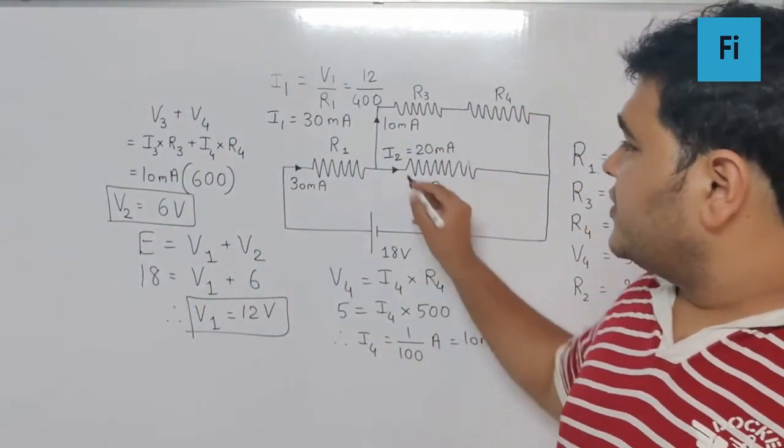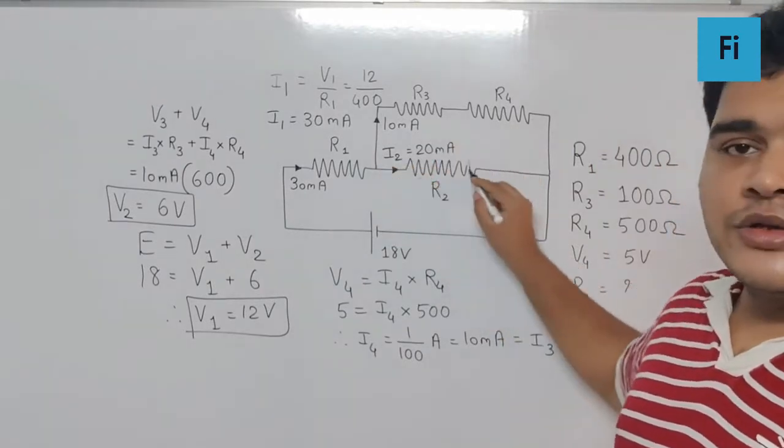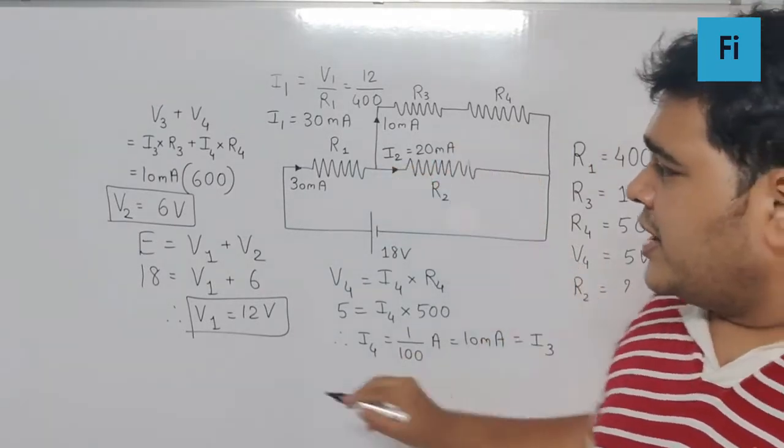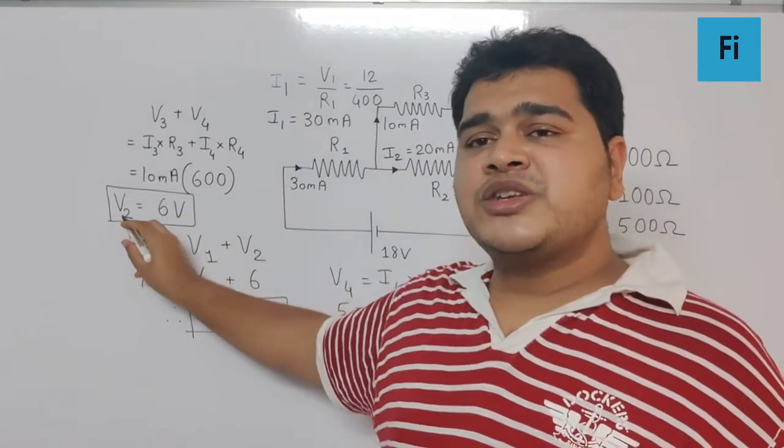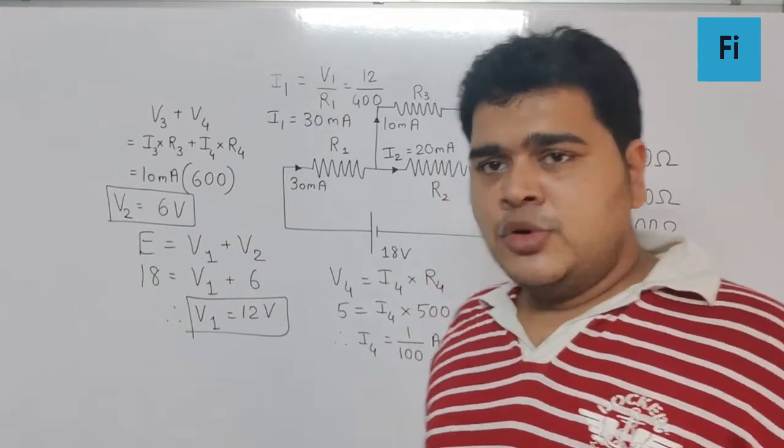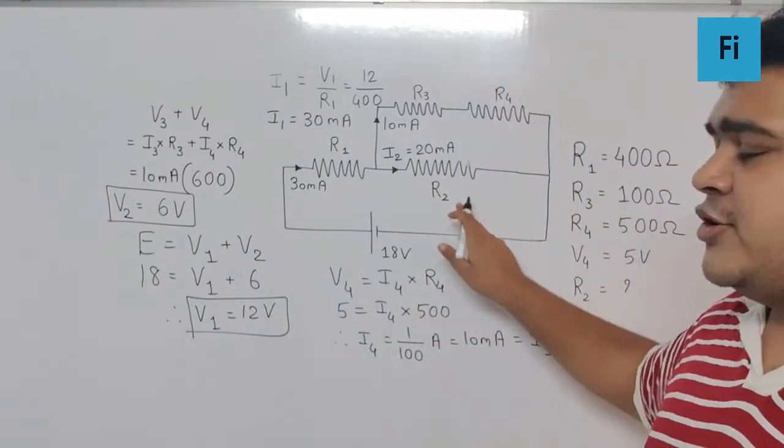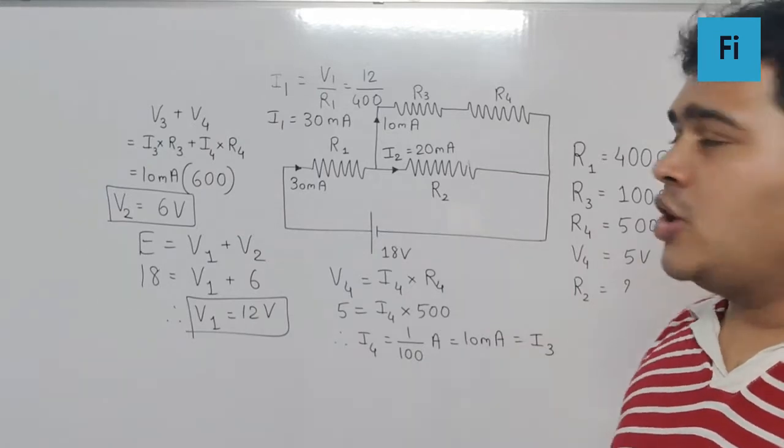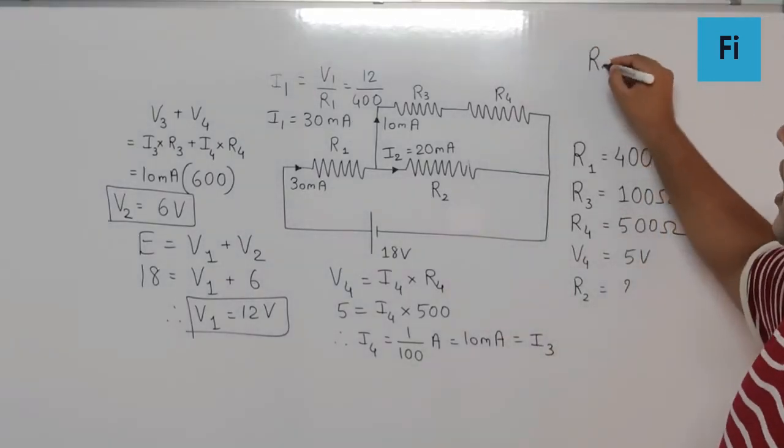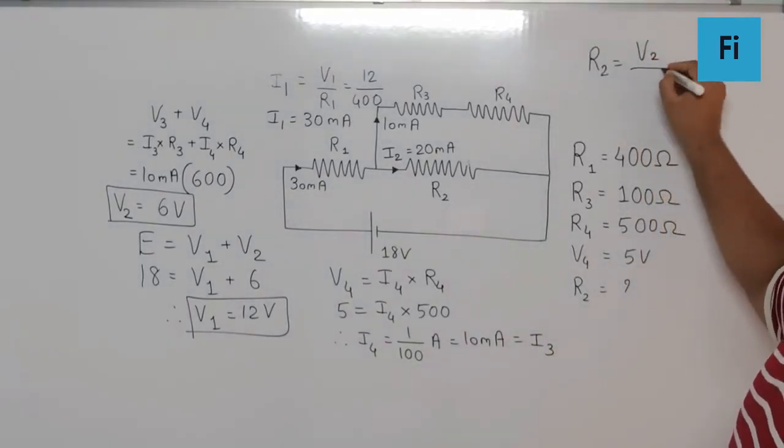Now if you know this, we already know the value of that current through resistance R2, and we also know the value of the potential difference across R2. So definitely we can find the value of R2 using Ohm's law as R2 equals V2 upon I2.